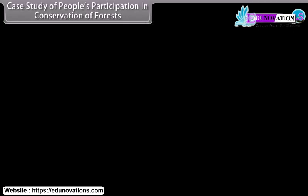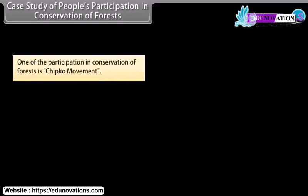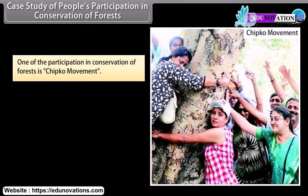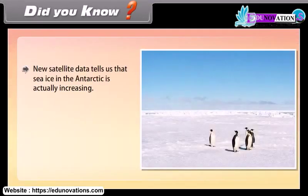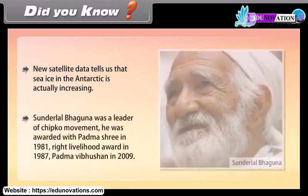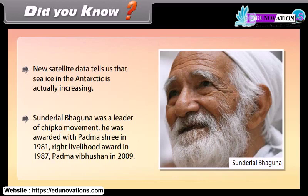Case study — people's participation in conservation of forests: One example is the Chipko movement. The first Chipko movement took place in April 1973 and over the next five years spread to many districts of Himalaya in Uttar Pradesh. The villagers hugged trees to save them. Sundar Lal Bahuguna was a leader of the Chipko movement. He was awarded the Padma Shree in 1981, the Right Livelihood Award in 1987, and the Padma Vibhushan in 2009.